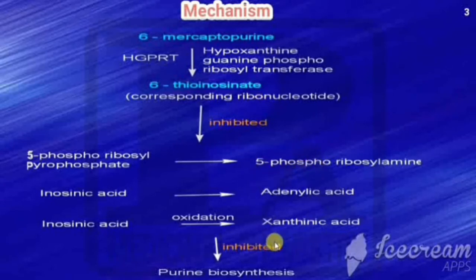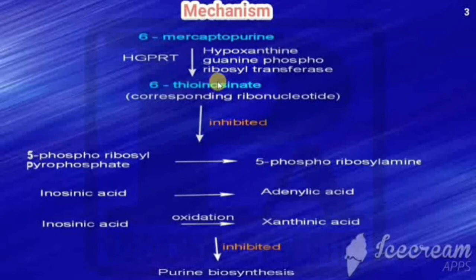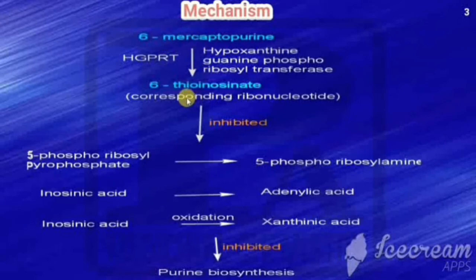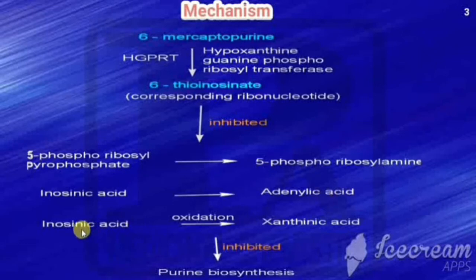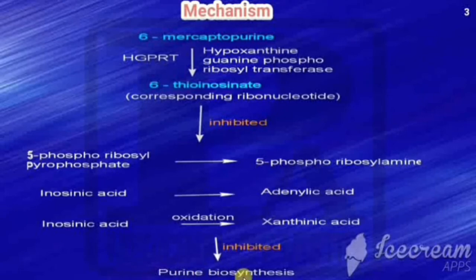These three processes are responsible for purine biosynthesis. So the overall effect is that 6-MP inhibits the de novo synthesis of purines. In summary: 6-mercaptopurine is converted by HGPRT into the ribonucleotide 6-thioinosinate, which inhibits these three conversions responsible for purine biosynthesis, thereby blocking purine synthesis.